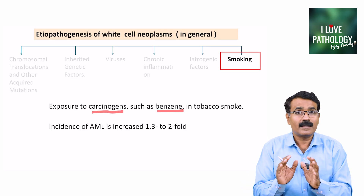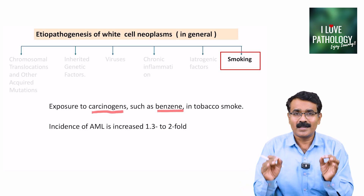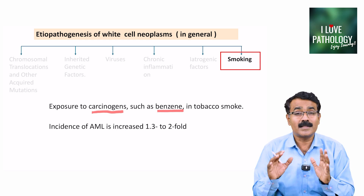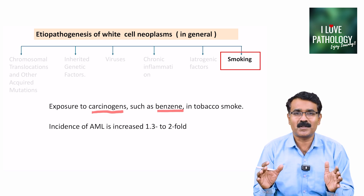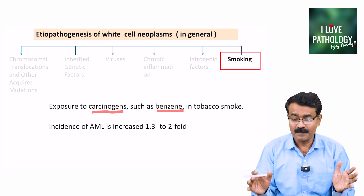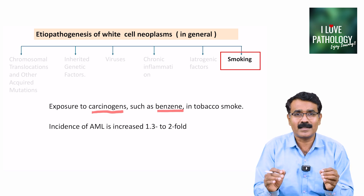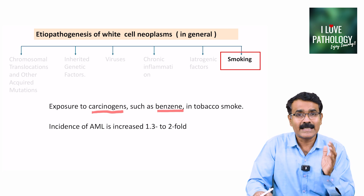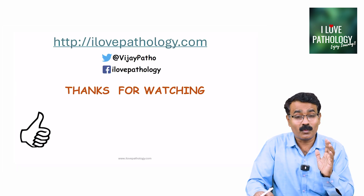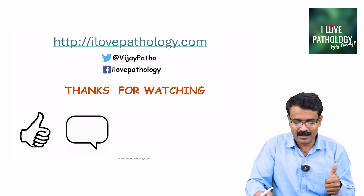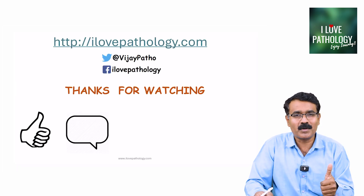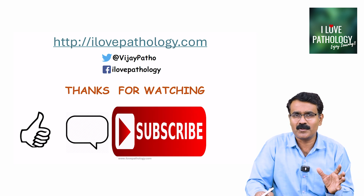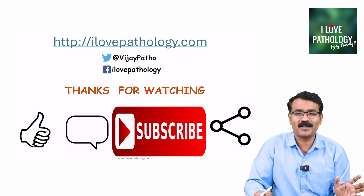In this session, we discussed how white blood cell neoplasms are classified and the general principles of etiopathogenesis of white blood cell neoplasms. In my next session, I will be discussing in detail about acute myeloid leukemia. Till then, stay tuned. If you liked this video, click the like button, do comment if you have anything to ask, subscribe if you find this video useful, and do share. Thank you. Bye-bye.